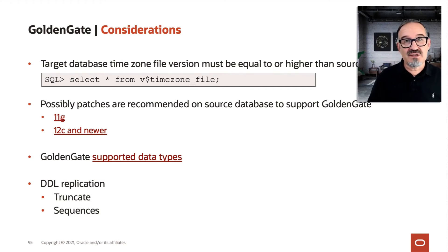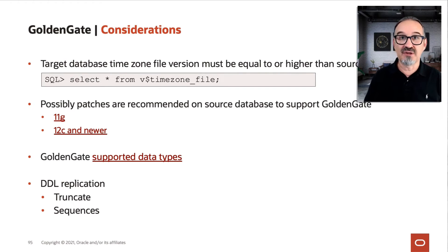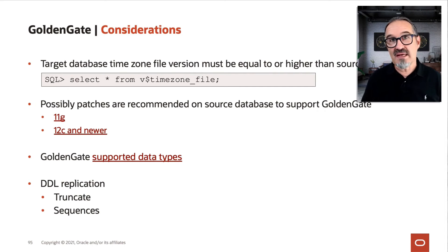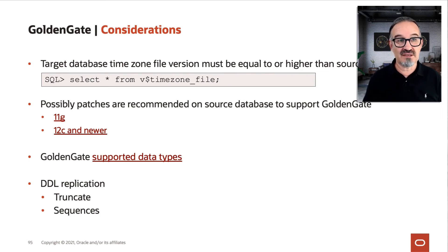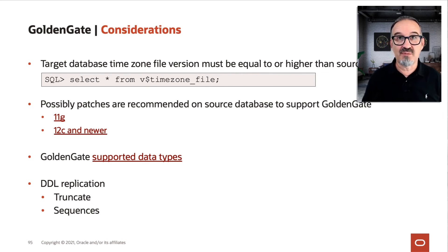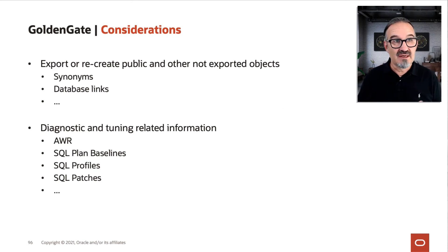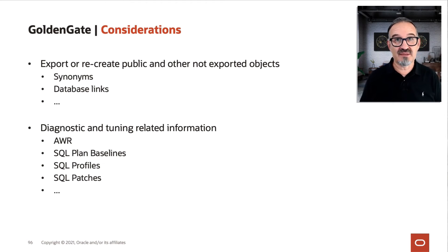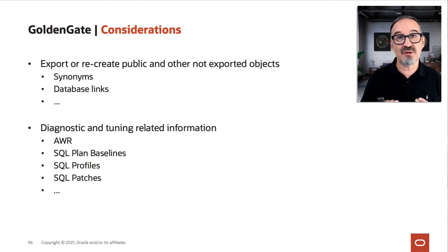A few considerations: the timezone file version must be equal or higher — it cannot be downgraded. If you have an older source database version, you may need some patches for GoldenGate and for the database, so check our links if that applies. Also check the supported data types. If you set up your target with an export/import, keep an eye on public objects, public synonyms, public database links, as they are usually not part of the standard full export.